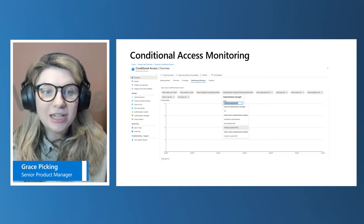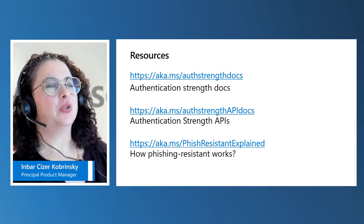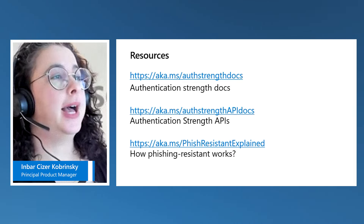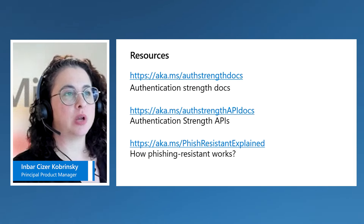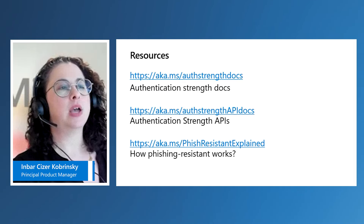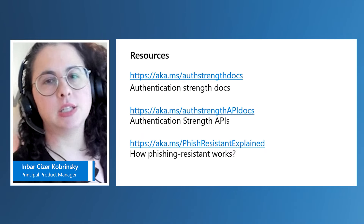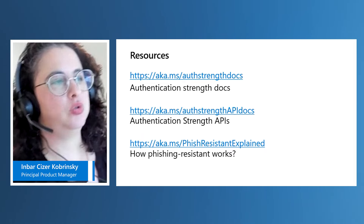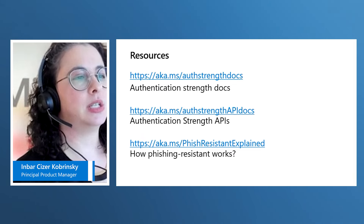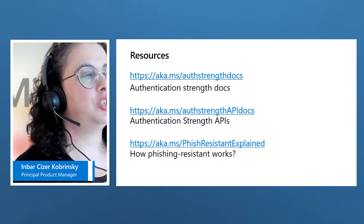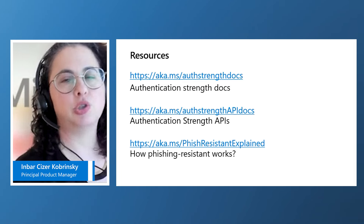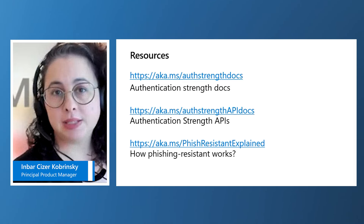With that, let's leave you with some homework. We have the aka.ms/authentication-strengths docs, which is our public documentation that goes into much more detail on the why and how things work. We have the authentication strengths API docs in case you want to take a programmatic approach and use our API to create and update those policies. And finally, if you're wondering what phishing-resistant means, we have a great resource at aka.ms/phish-resistant that talks about what makes Windows Hello for Business, certificate-based authentication, FIDO2, and passkeys phishing-resistant.